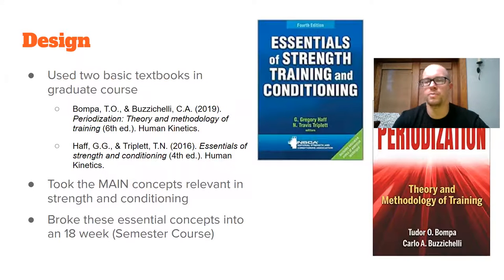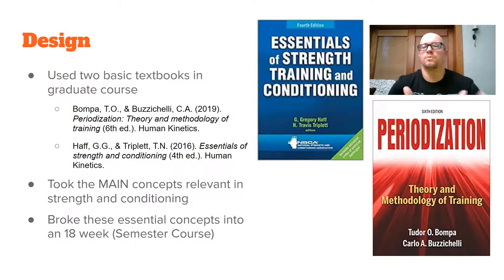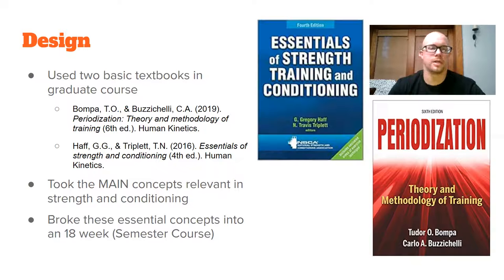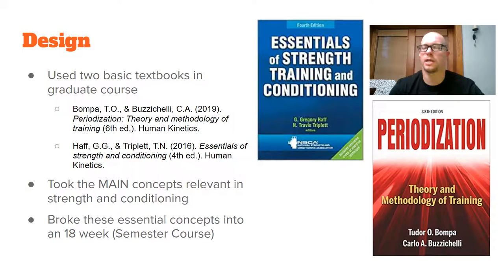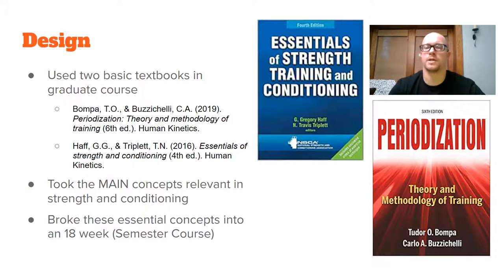I used two main textbooks for the class, both part of our concentration: the Essentials of Strength and Conditioning, and Periodization: The Theory and Methodology of Training by Bompa and Buzzichelli. I took the main concepts from these books and broke them into the essentials I thought high school students need to know for this 18-week semester course. The Essentials of Strength and Conditioning is the textbook you study for the CSCS — the Certified Strength and Conditioning Specialist exam — so I figured that was the best place to start.